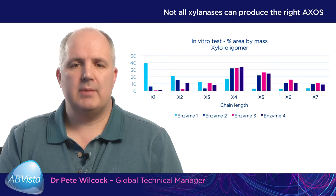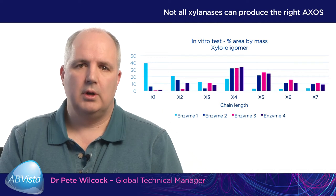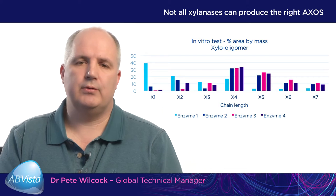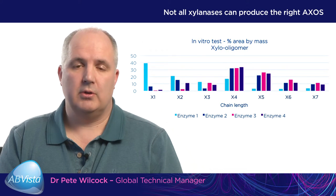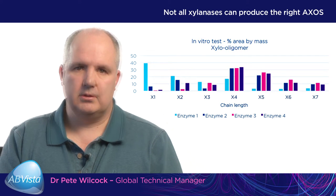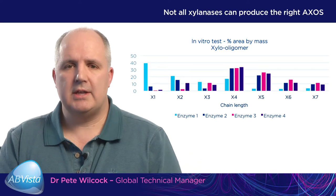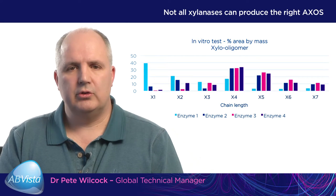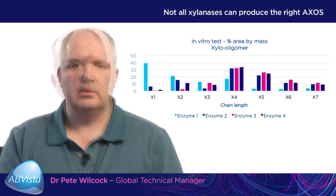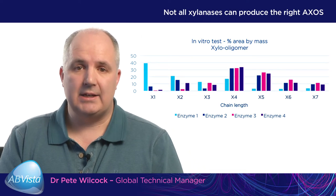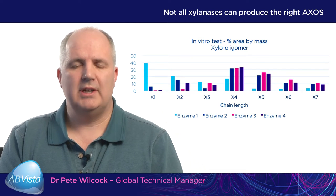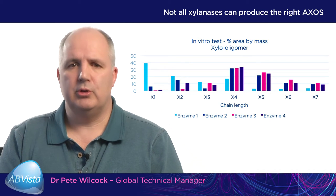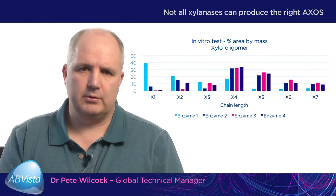Enzymes 2, 3, and 4 predominantly produce x4 and x5 length chains of xylooligomers. However, enzyme 1 shows a high concentration of xylose. We know that xylose can be negative to the animal, and it is not something we generally want to produce in terms of improving production efficiencies and animal performance.